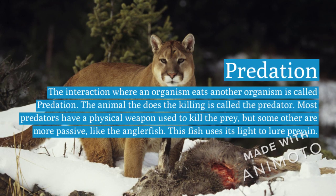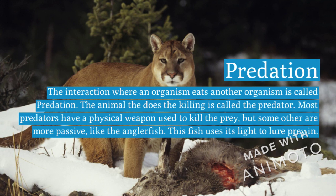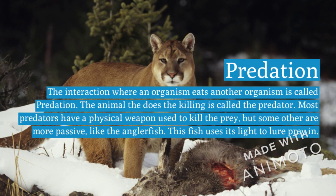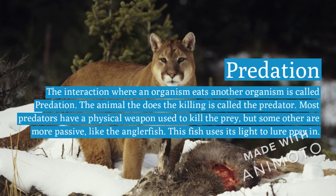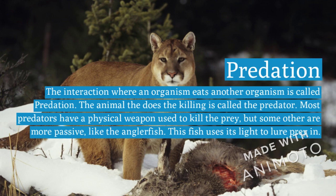The interaction where an organism eats another organism is called predation. The animal that does the killing is called a predator. Most predators have a physical weapon used to kill the prey, but some others are more passive, like an anglerfish.